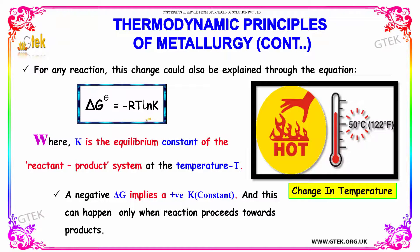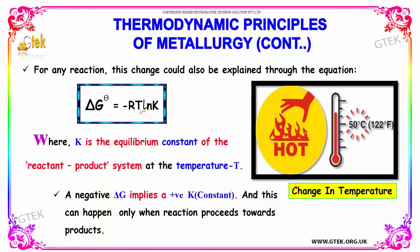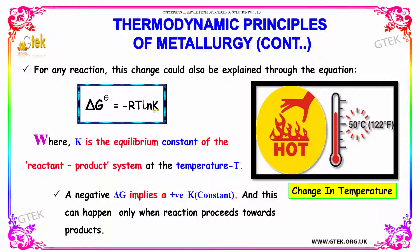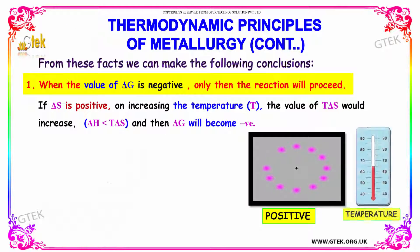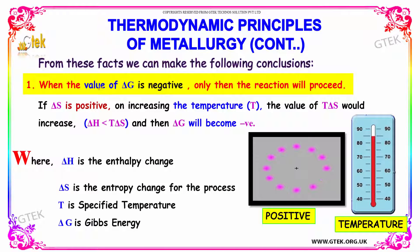For any reaction, this change could be explained through the equation: delta G° at temperature T equals minus R times T times ln K, where K is the equilibrium constant of the reactant-product system at temperature T. A negative delta G implies a positive K constant, and this can happen only when reactions proceed towards the products. From these facts, we can make the following conclusions: the reaction will proceed only when the value of delta G is negative.